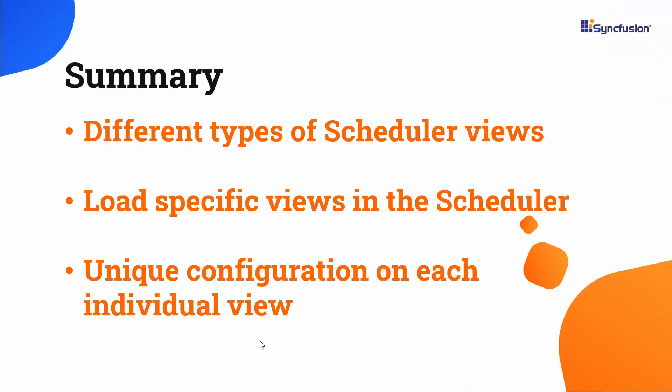Let me summarize the important points we discussed in this video. We have seen the different types of views available in the Blazor scheduler, and discussed how to work with each scheduler view's unique configurations. If you would like to see the working example, you can download it from the GitHub link shared in the description below. You can also get a free license key to use our complete Blazor products if you fit into our community guidelines — check the link in the description to see if you are eligible. If you find this video useful, don't forget to click the like button and subscribe to our channel.